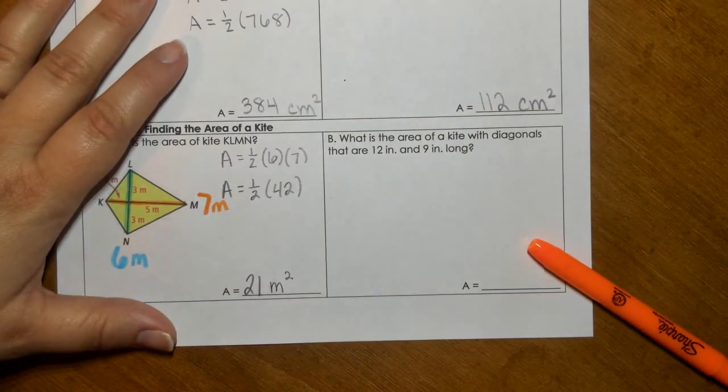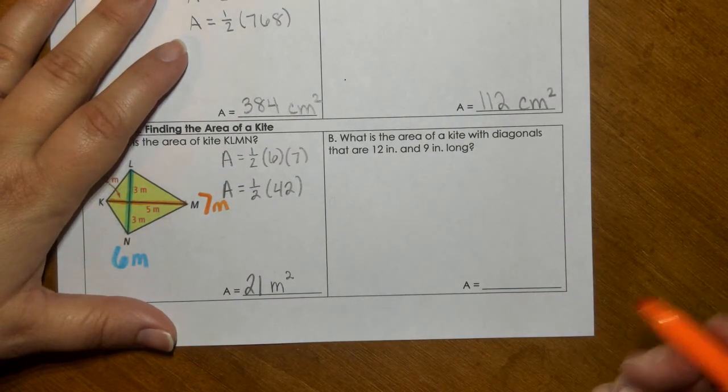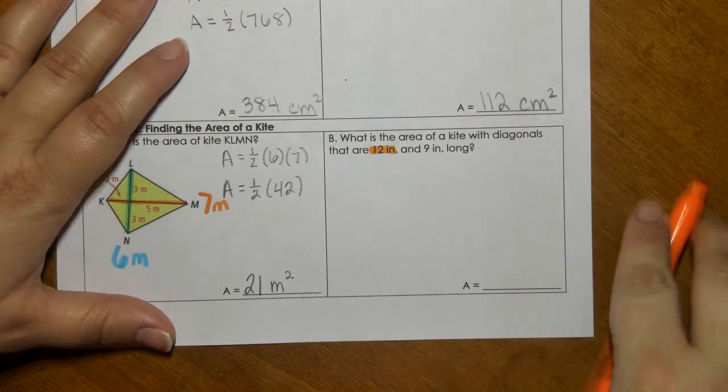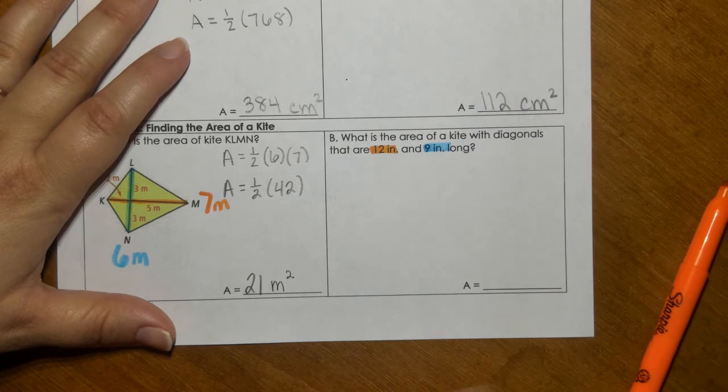In part B, instead of giving you a picture, they're just giving you a description. What is the area of a kite with diagonals that are 12 inches and 9 inches long?